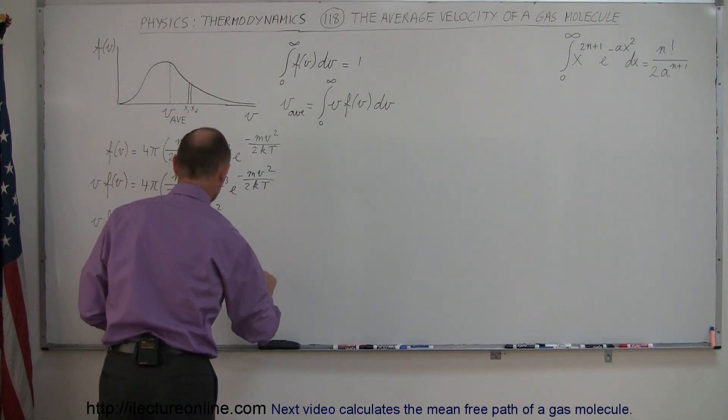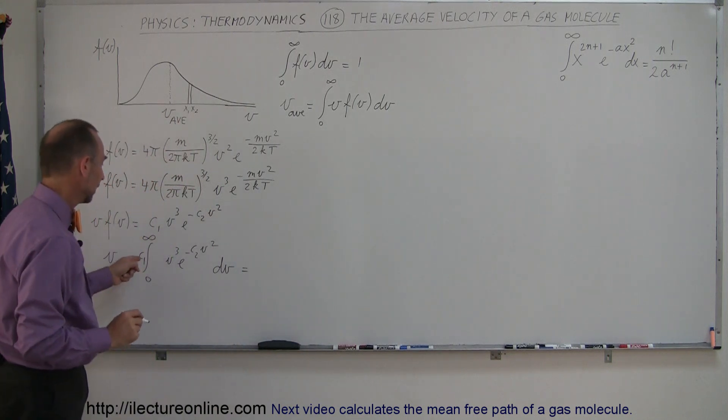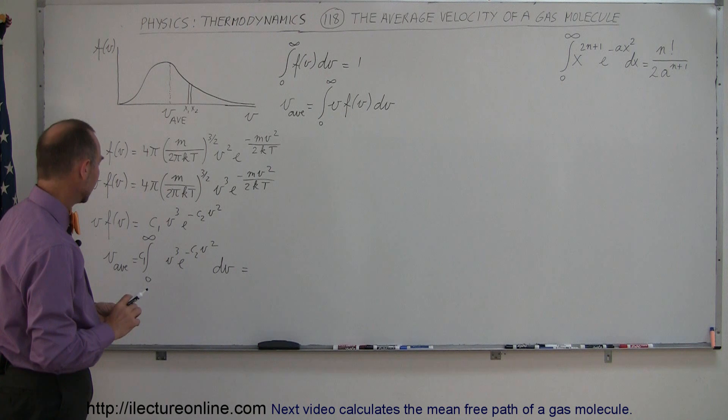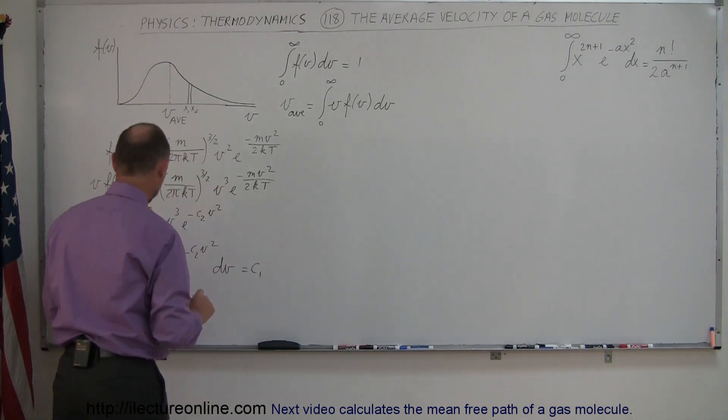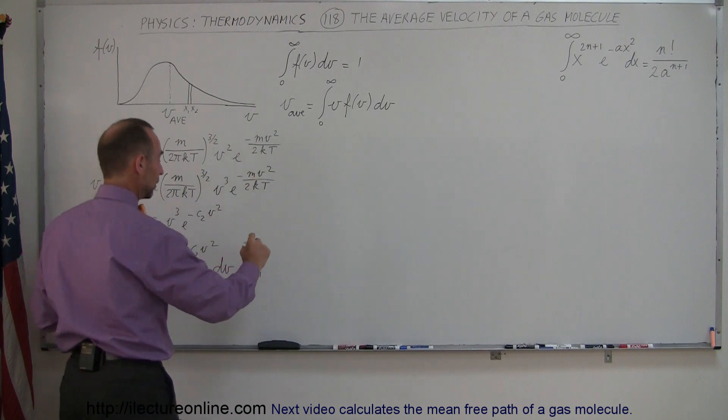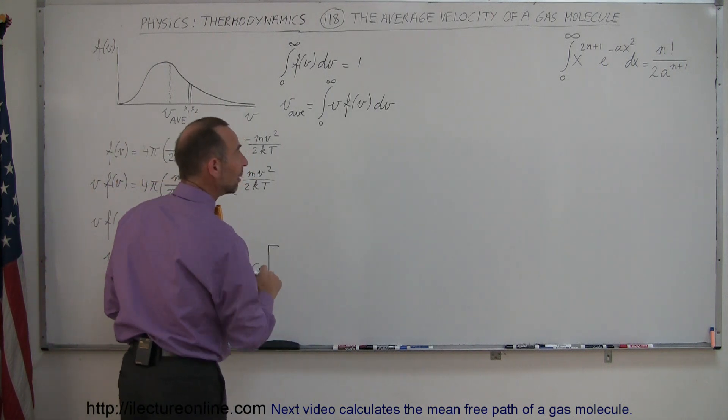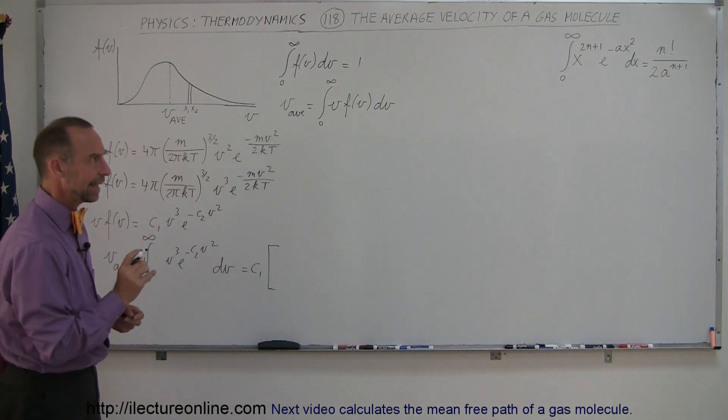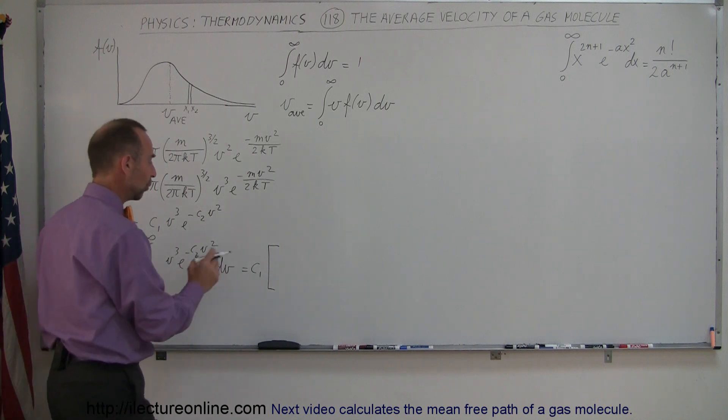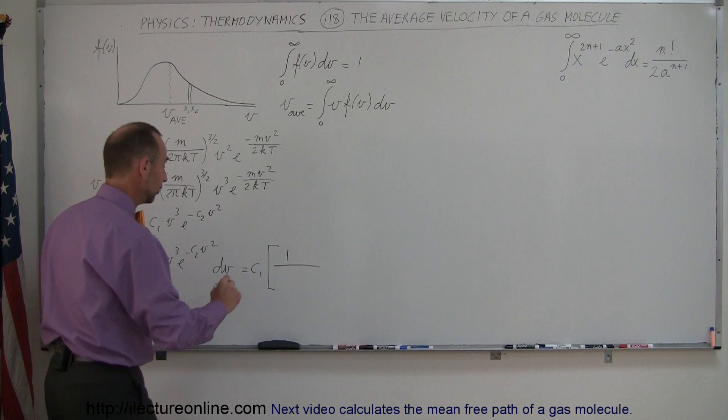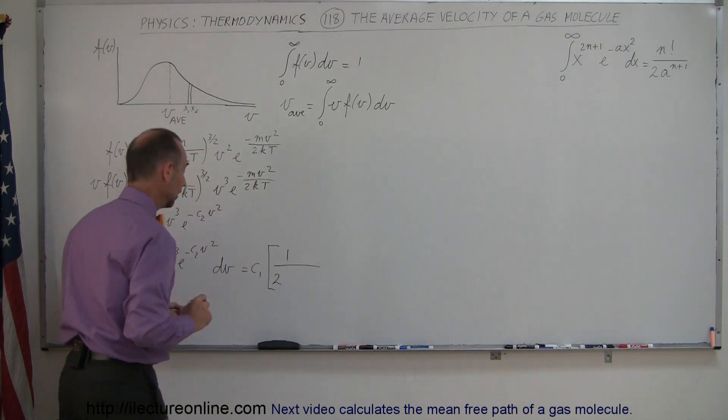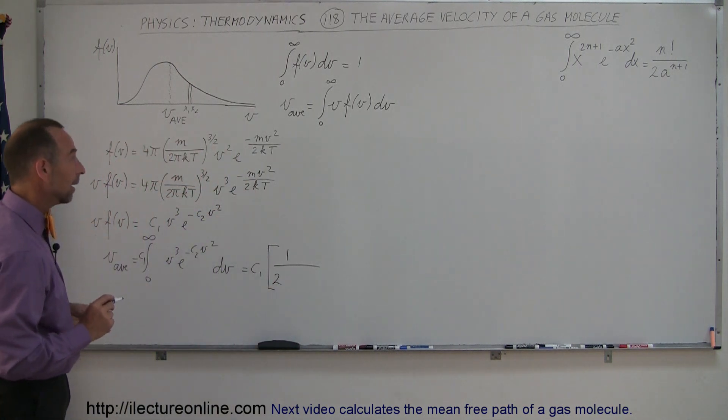So this is equal to, and of course I can't forget my C1 here, so we have C1 times this quantity right here. So I need an N factorial. Now, we said that N had to be 1 to make this match, so 1 factorial is simply 1 divided by 2 times A.